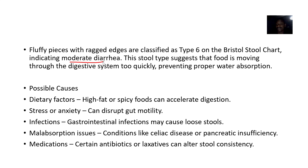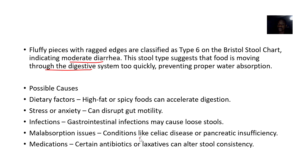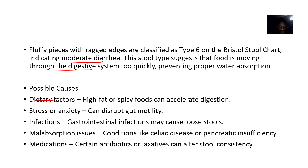These stool types suggest that food is moving through the digestive system too quickly. For Type 6, you have a lot of water in your stool, which means water absorption is not proper. Possible causes could be dietary — for example, taking high fat or spicy foods.